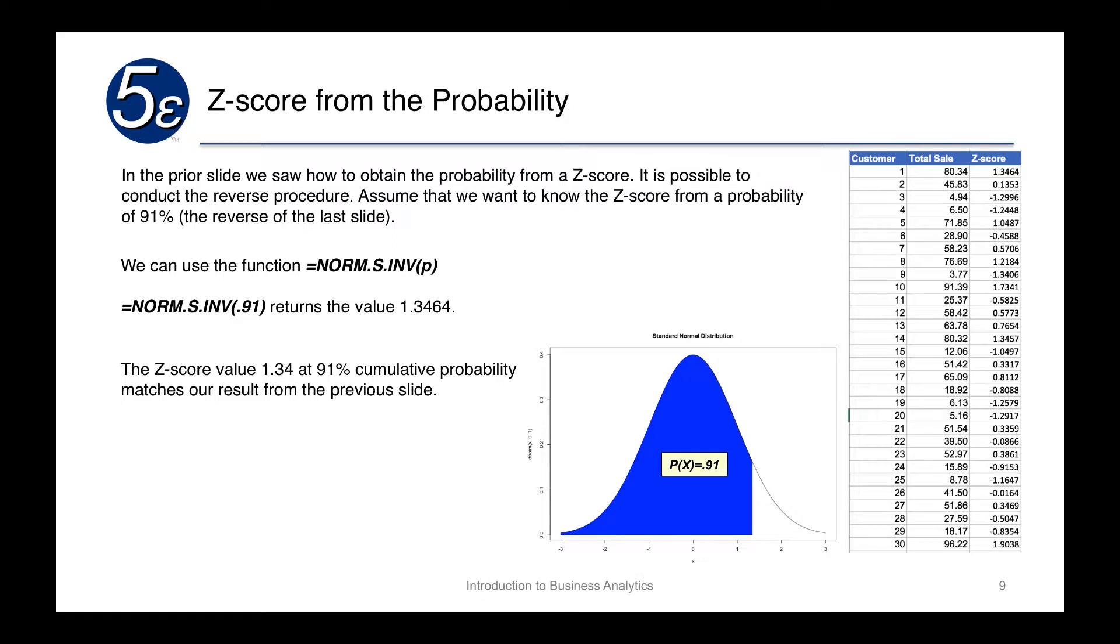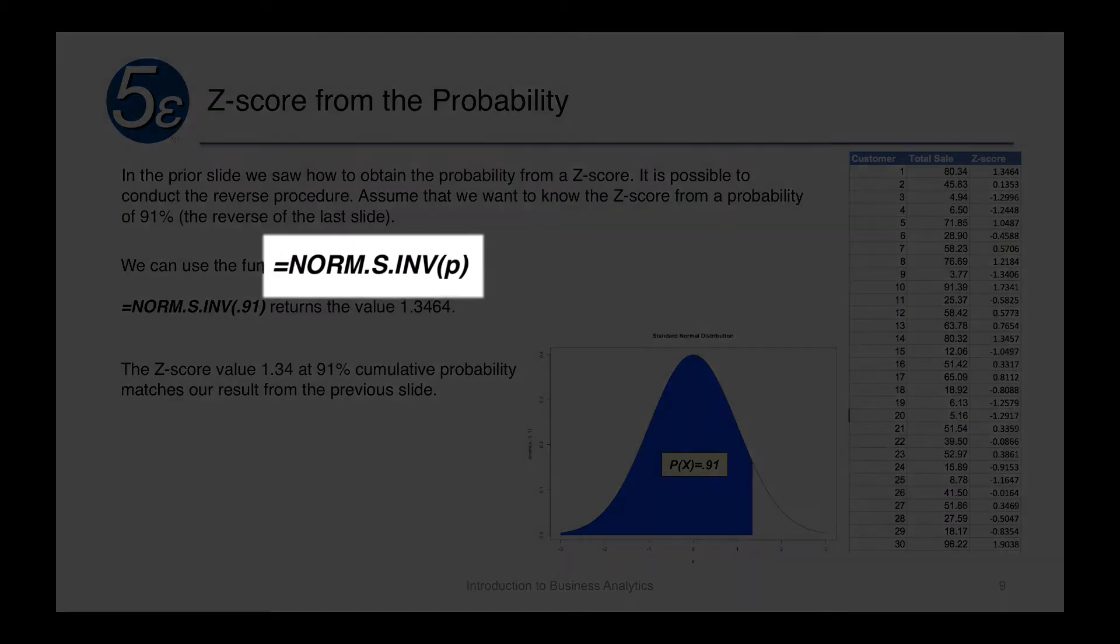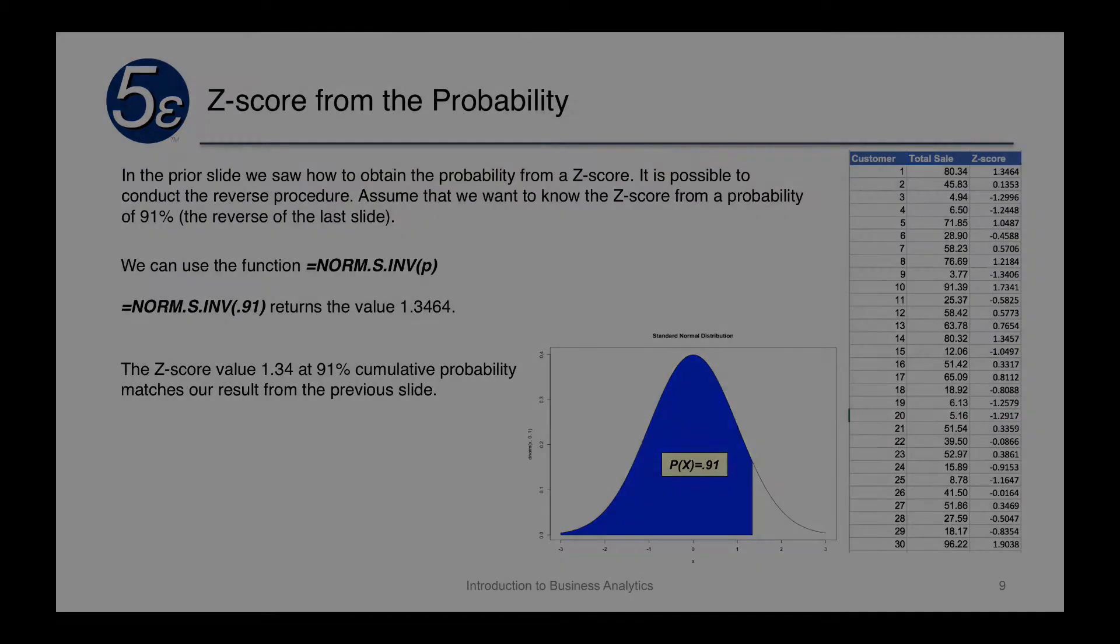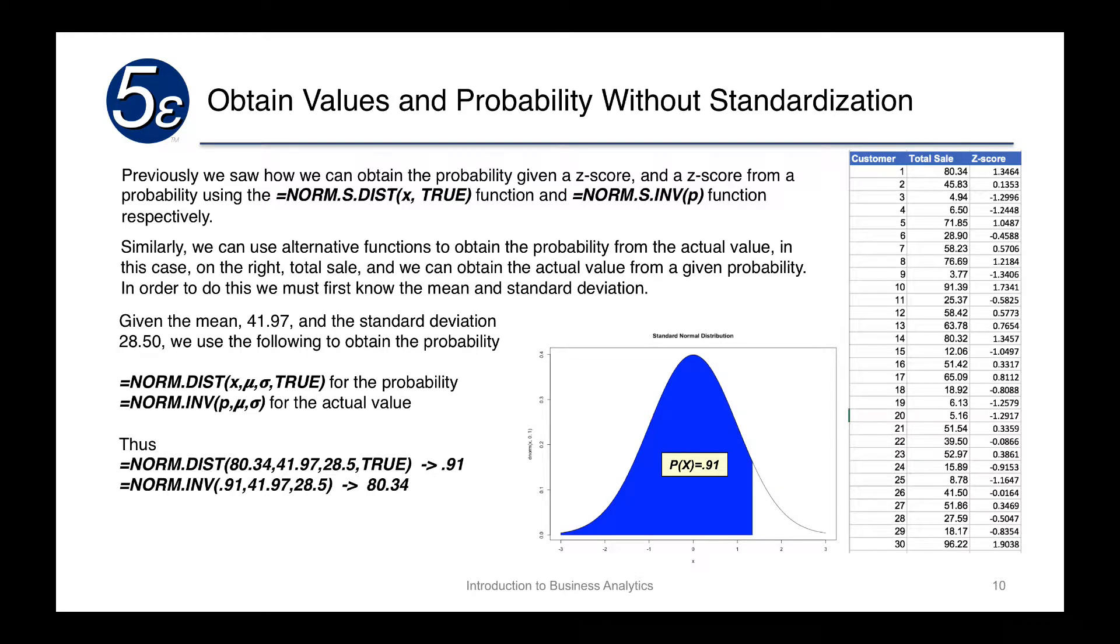In the prior slide, we saw how to obtain the probability of a z score. It's possible to conduct a reverse procedure. Assume that we want to know the z score from a probability of 91% or 0.91. We can actually use the reverse. We do NORM.S.INV with the probability. If we put in 0.91 as the parameter, it will return 1.3464. What this basically says is that if we're looking for the 91% cumulative probability, the value is going to be 1.3464 for the z score. We can then use that to calculate what the total sale would be at that 91%. Previously, we saw how we can obtain the probability given a z score and a z score from the probability using the NORM.S.DIST and NORM.S.INV functions.